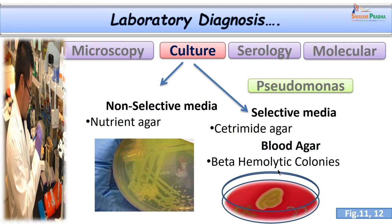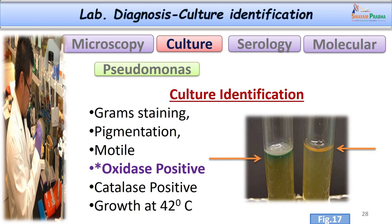The pus sample is cultured on non-selective and selective media. On simple non-selective medium, the organism produces a greenish-yellow diffusible pigment. It can also be grown on selective media like cetrimide agar. When Pseudomonas is grown on blood agar, it produces beta-haemolytic colonies. In liquid culture, the pyorubin pigment can also be demonstrated.